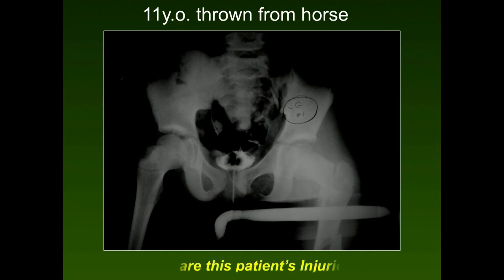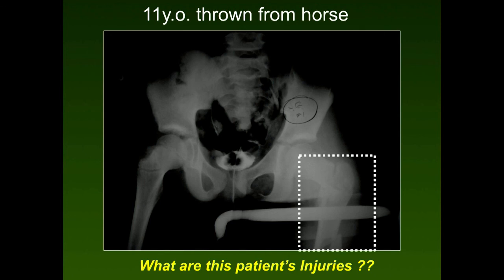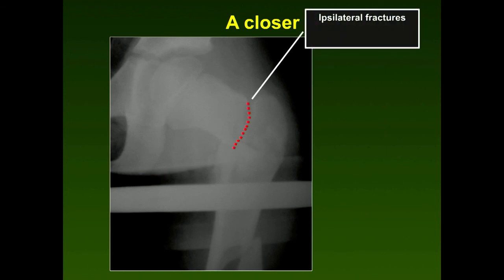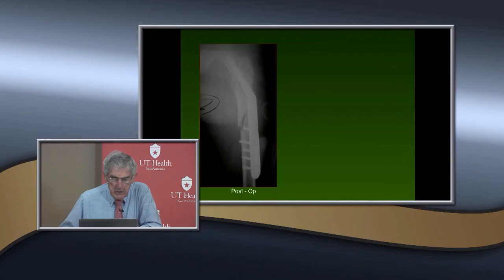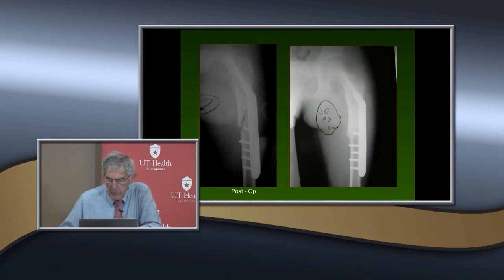An 11-year-old thrown from a horse with a left basicervical femoral neck fracture and an ipsilateral subtrochanteric fracture — two fractures. Treatment: fix the femoral neck first with compression screws, then address the shaft. Since the child is approaching skeletal maturity, you can use intramedullary fixation for the subtrochanteric component. He went on to heal in five months.